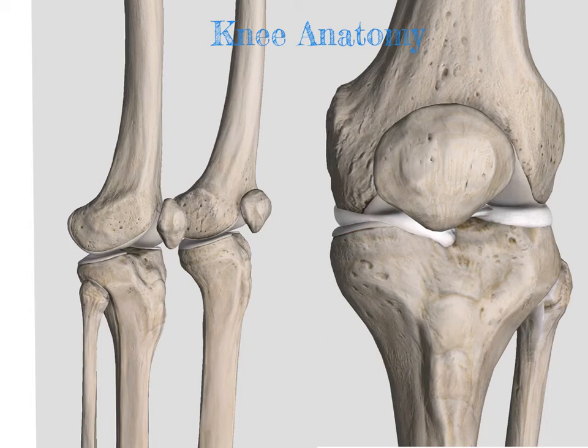This video is reviewing the anatomy of the knee. Starting with the anterior side, we have the patella. This is a sesamoid bone, and its purpose is to increase the efficiency of the quadricep group.